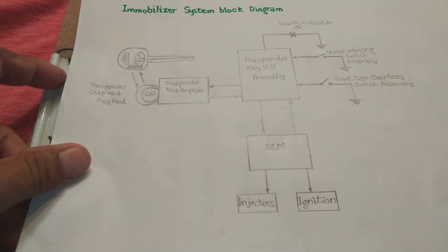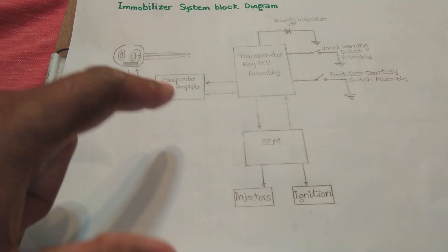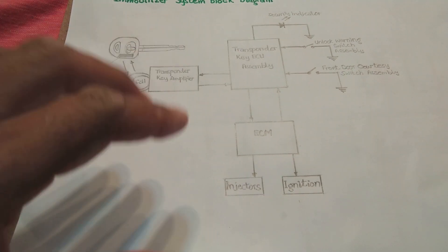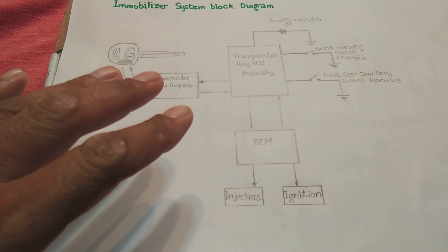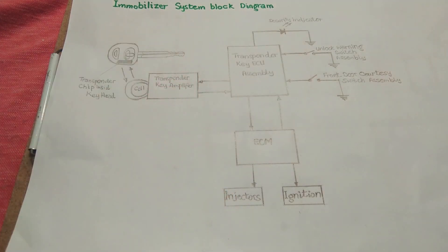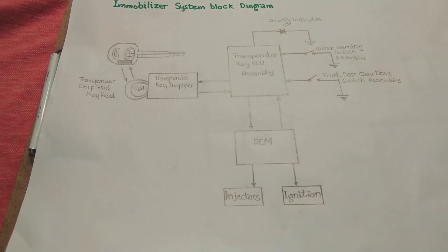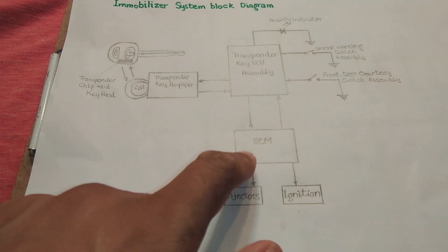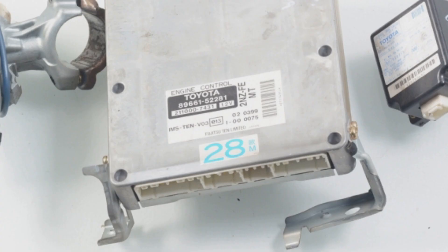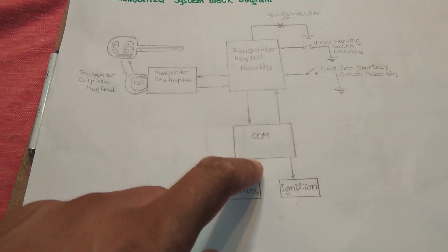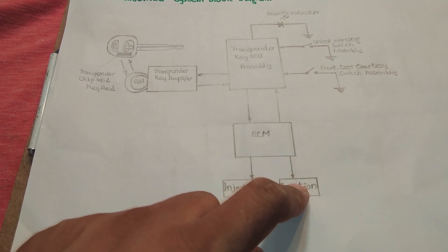First of all you have to understand the block diagram, because the block diagram creates simplicity so that you will be able to understand the original circuit. The block diagram shows there are components like the ACM. The ACM is the main computer of the car, which is responsible for the whole system — it controls the injectors and the ignition as well.